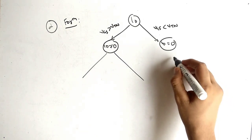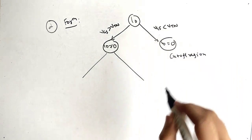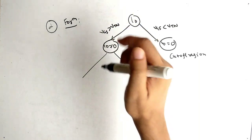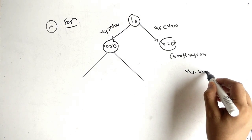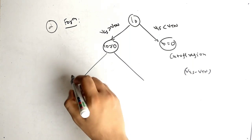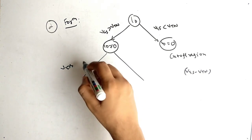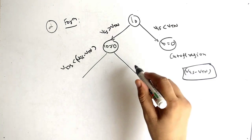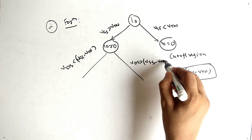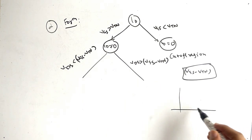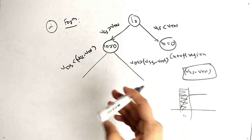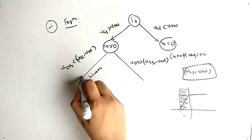In the cutoff region no current flows. When the circuit is active, it can be in linear or saturation. The condition is: when VGS is greater than VTN, compute VGS minus VTN. Now for VDS: when VDS is less than VGS minus VTN, this area corresponds to the linear region.